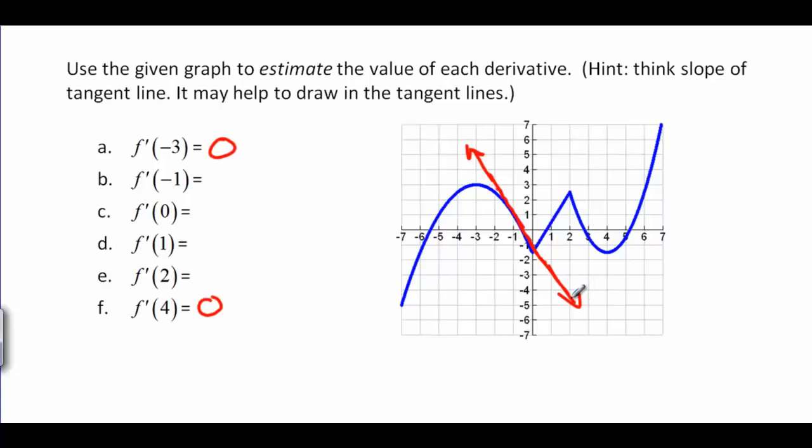And if I pick some points on this line to look at, here is negative 1, 1. And then here's negative 2, 3. And negative 3, 5. It looks like the change in y is about 2. And the change in x is about 1. So this should be 2 over 1, which is 2.